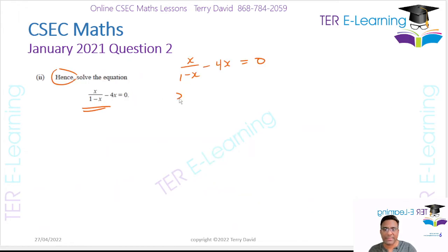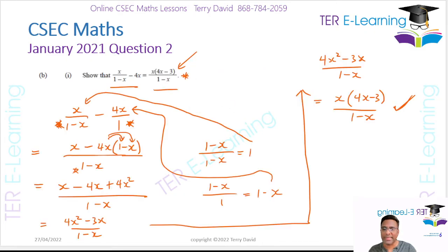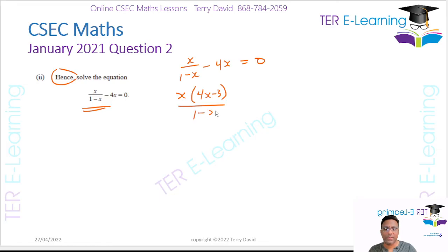So it's going to be x, open brackets, 4x minus 3, all over 1 minus x is equal to 0. So all I've done, this expression here, I've replaced it with what we got previously.